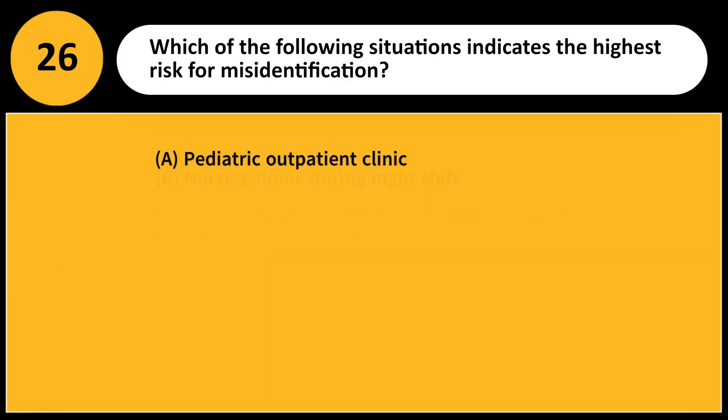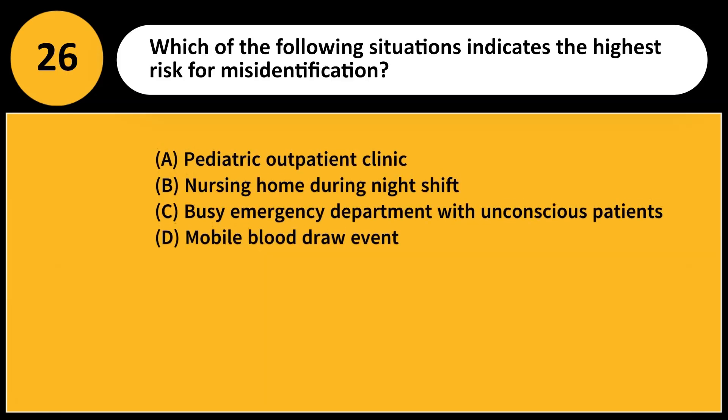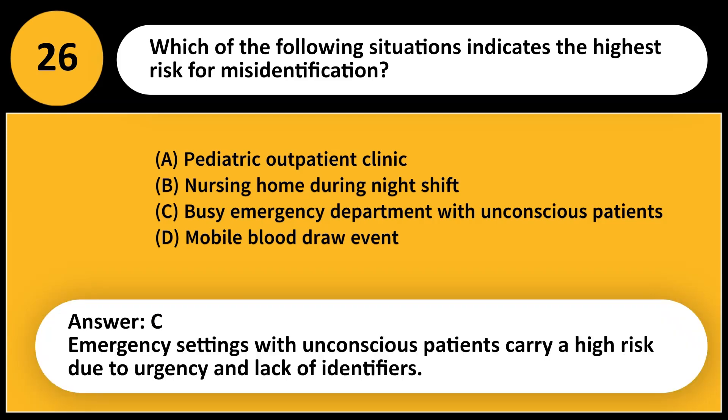Which of the following situations indicates the highest risk for misidentification? A. Pediatric outpatient clinic. B. Nursing home during night shift. C. Busy emergency department with unconscious patients. D. Mobile blood draw event. Answer: C. Emergency settings with unconscious patients carry a high risk due to urgency and lack of identifiers.